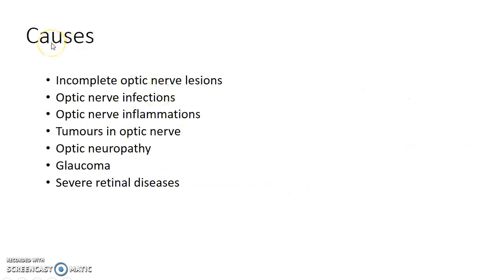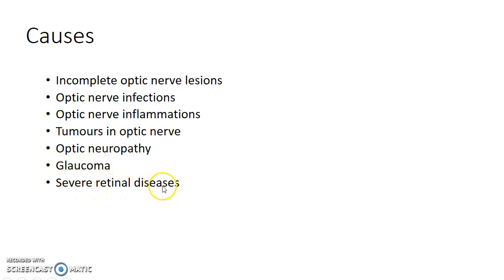The causes of RAPD or Marcus Gunn pupil include incomplete optic nerve lesions, optic nerve infections, optic nerve inflammations, tumours in the optic nerve, optic neuropathy, glaucoma, and severe retinal diseases.